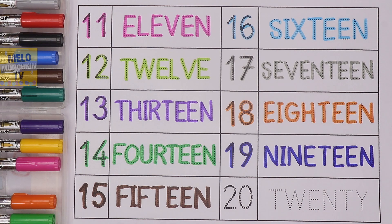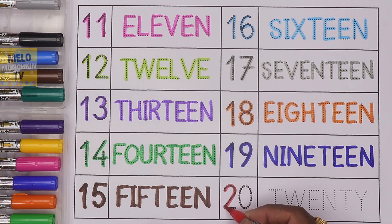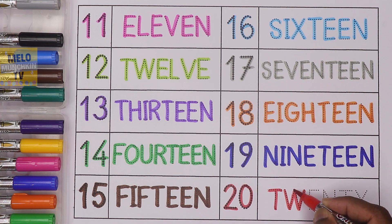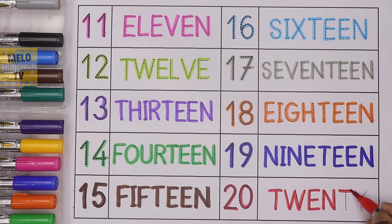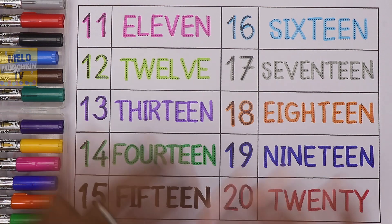And finally I'll take red color to write the number 20. 2, 0, 20. And the spelling is T W E N T Y. 20, 2, 0, 20. T W E N T Y, 20. So we have completed our numbers and number names with colors. I hope you like this video, kids! If you like it, hit a thumbs up and share this video with your friends. See you in my next video — till then, take care and bye bye!